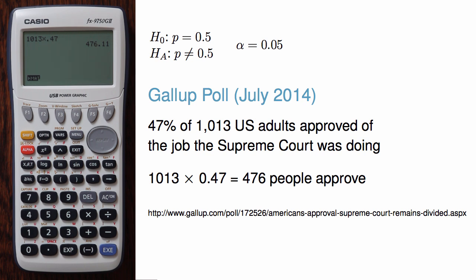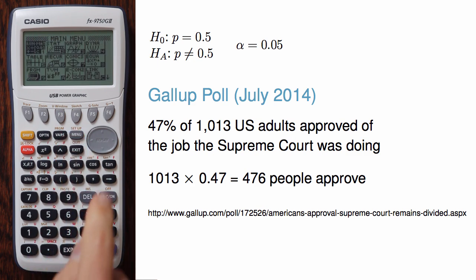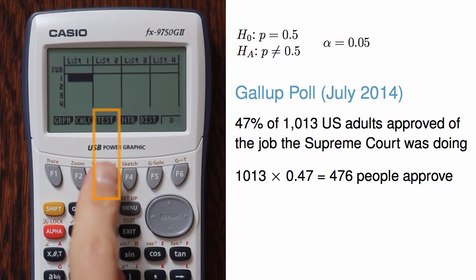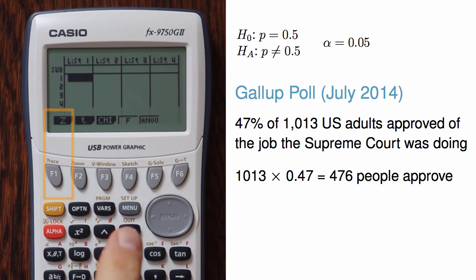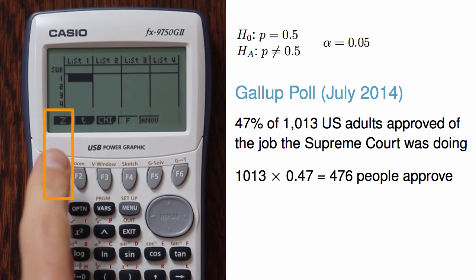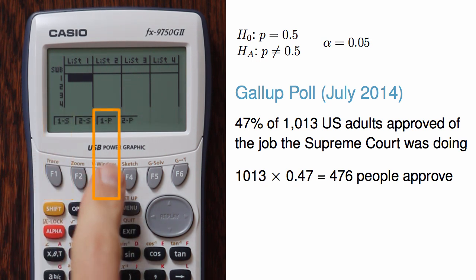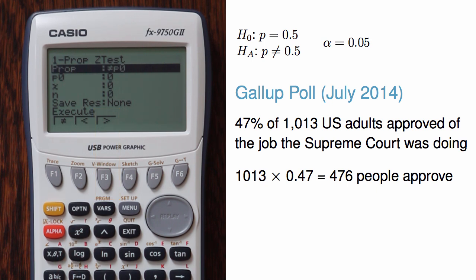To conduct a one-proportion hypothesis test on the calculator, go to menu, navigate to stat, hit F3 to open the tests section. For proportions we'll use a z-test, so hit F1, and finally choose 1P for one-proportion hypothesis test.